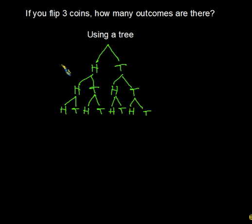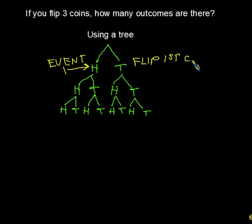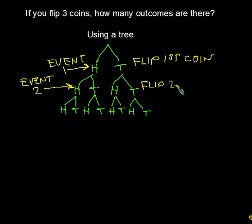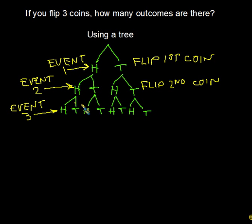Now let's add some notes to this tree diagram so we can put this in terms of the vocabulary words we just learned. Event one is what happens right at this level of the tree — we get heads and tails. Event one was flip the first coin. Event two gave us extra outcomes — two outcomes for each of the first two outcomes. Event two was flip the second coin. And then there was a third event: flipping the third coin.